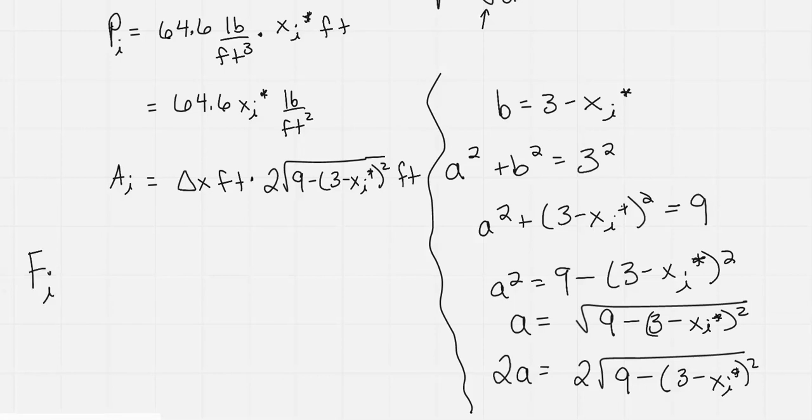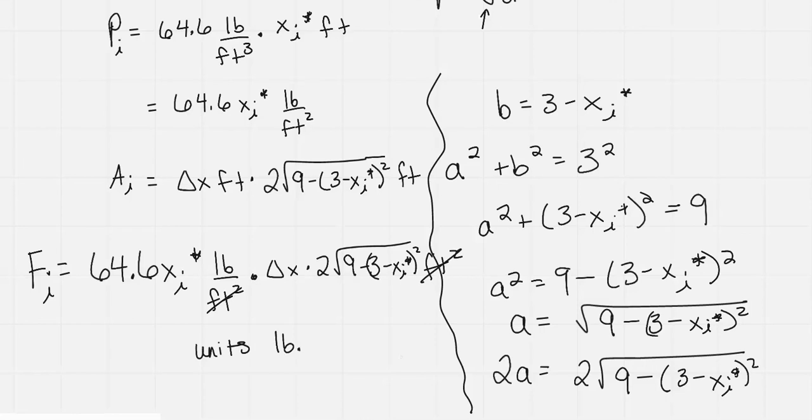My force at that ith slice is the pressure times the area. My pressure was 64.6 x sub i star pounds per square foot times delta x times 2 square root of 9 minus (3 minus x sub i star) squared in square feet. The square foot cancels out, and the units for the force will just be in pounds. Pounds is what we want.